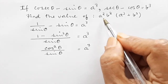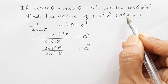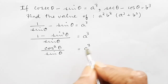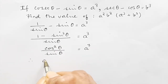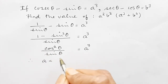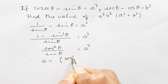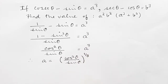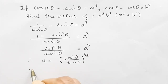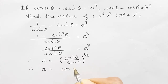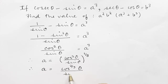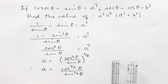Now, to find the value of a²b²(a²+b²) we must know the value of a individually. Since a³ = cos²θ / sin θ, taking the cube root on both sides gives us a = (cos²θ / sin θ)^(1/3). Therefore, a = cos^(2/3)θ / sin^(1/3)θ.